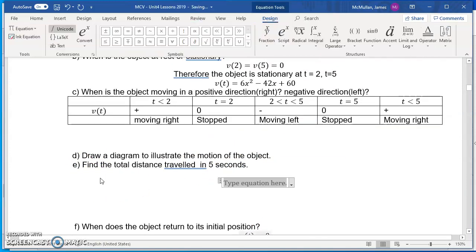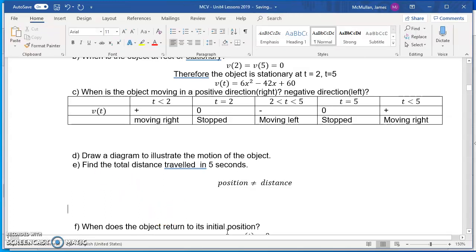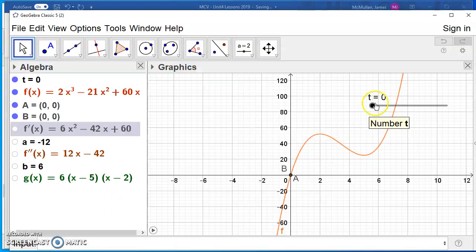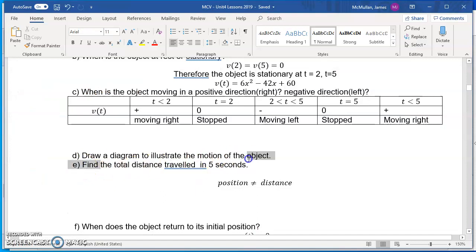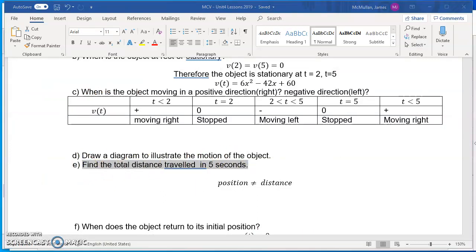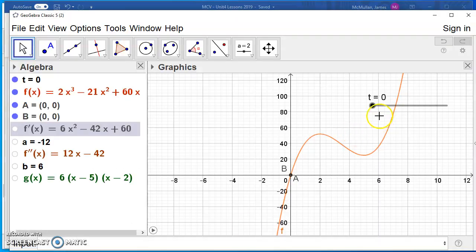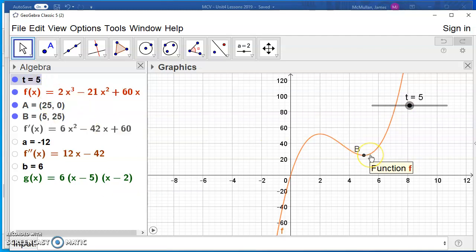Draw a diagram to illustrate the motion of the object. Again, what you're doing here is you're drawing this cubic. Let's just get rid of the derivative for a sec. It starts at 0, 0. It rapidly rises up until this point at 2. And then it drops down until this point at 5. And then it starts rising again. Something like that is all you need there. A sketch of it is good.